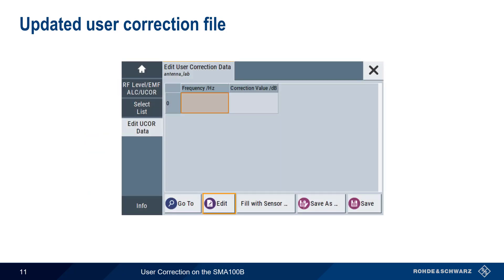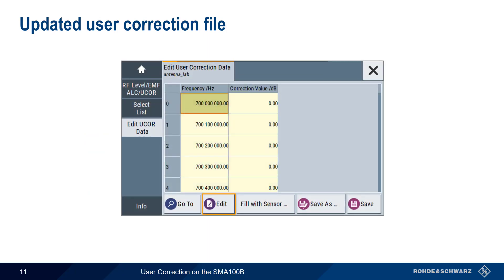Our previously empty user correction file should now be filled with data points in the Frequency Per Hertz column. We see steps every 100 kHz as we configured in the previous step. The correction value per dB column, however, is still filled with all zero values. The next step, therefore, is to fill these values with data from the sensor, so we choose Fill with Sensor.